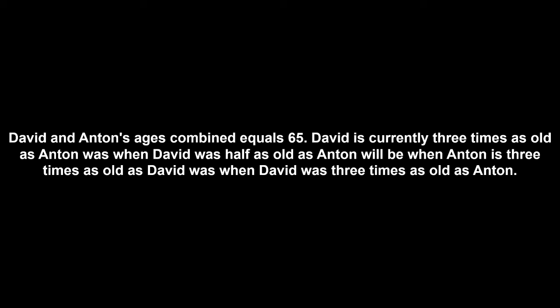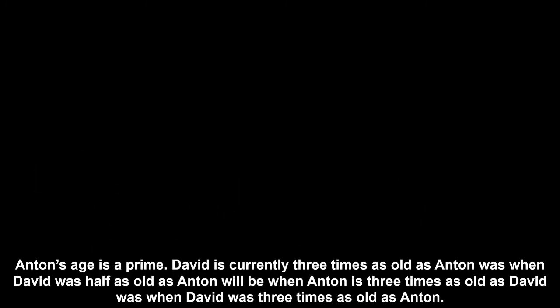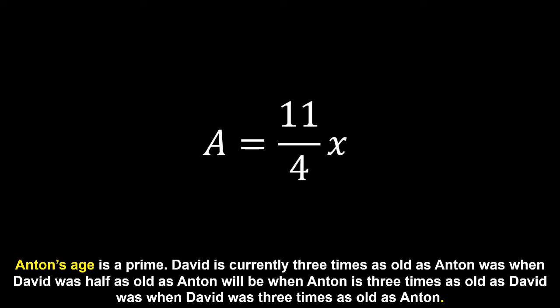But when is this not a puzzle? If we take the later example from the video, where instead of saying their combined ages are 65, the only other information we're given is that Anton's age is a prime, can we still work it out? Given that the second half of the puzzle has not changed, we can still define David's age as 15 on 4 times their age difference. But we also need Anton's age, which can be defined as 11 on 4 times the age difference. With no other constraints, we cannot have a single answer for this puzzle.